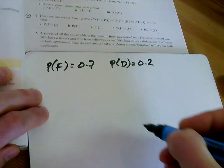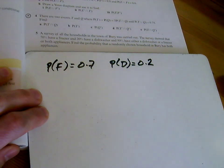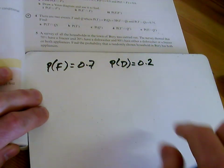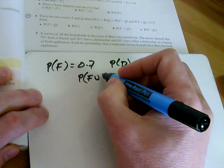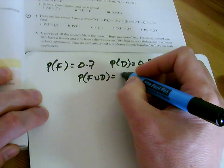This must be an old survey. I don't believe only 20% have dishwashers anymore. And 80% have either. So either is the union of them. So freezers and dishwashers is 0.8.